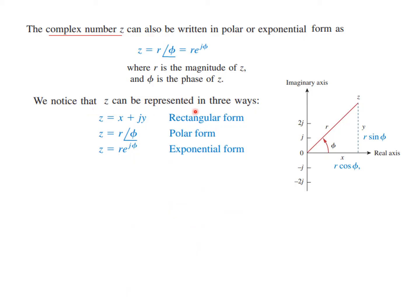A complex number z can be represented in three forms. The rectangular form is z = x + jy. Since x represents R·cos(Phi) and y represents R·sin(Phi), it can also be written as R·cos(Phi) + j·sin(Phi). The exponential form is e raised to the power j·Phi. According to Euler's formula, e^(jΦ) = cos(Phi) + j·sin(Phi).